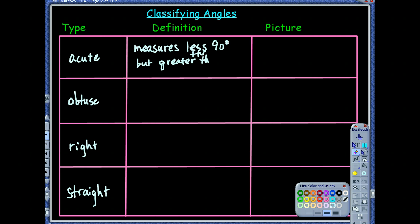We could even write it as a compound inequality. Less than 90 but also greater than zero. So somewhere between zero and 90.